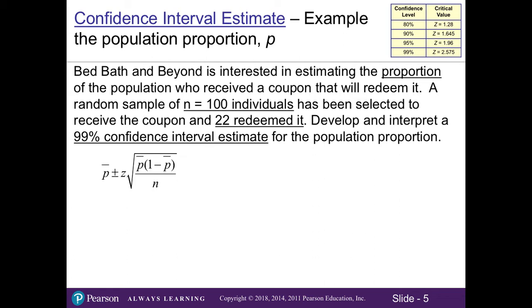We need to first determine our sample proportion of people who used the coupon. So to do that, we'll take x divided by n or the 22 people who used the coupon divided by the hundred people in our sample. So our p bar is 0.22. Now our z value is based on the 99% confidence level in our table. So we can see that our z is going to be 2.575 and our little n or our sample size is the 100 individuals.